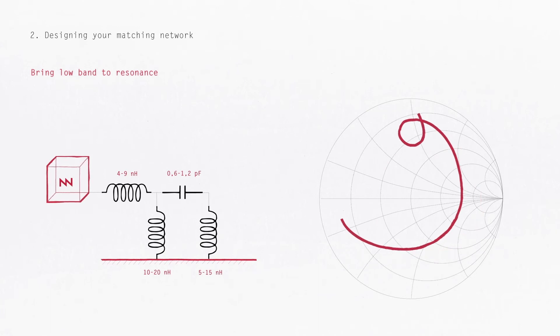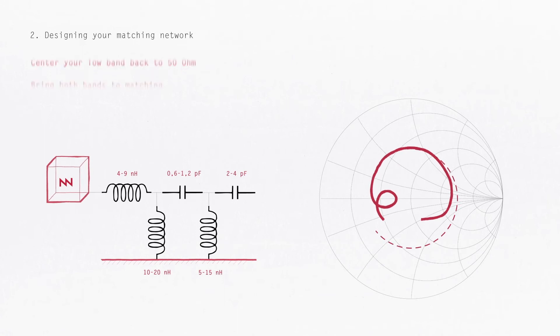Again, bring the low bands back to 50 ohms by using a shunt inductor. And finally, the match is completed with a series capacitor.